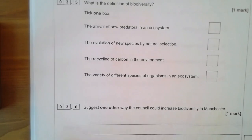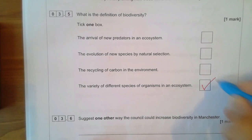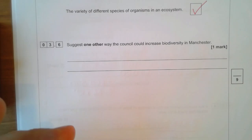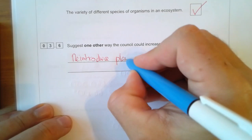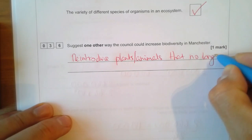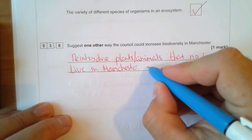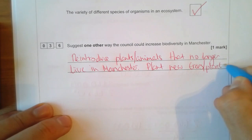Question three continues. The council says this will improve biodiversity — biodiversity is just the variety of different species of organisms in an ecosystem; that's something you'd have to learn. Suggest one other way the council could increase biodiversity in Manchester: you could reintroduce plants or animals that no longer live in Manchester, or plant new trees or plants — anything sensible really.